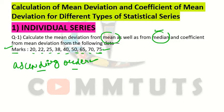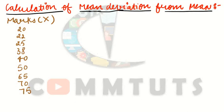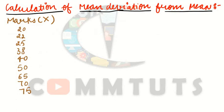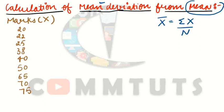Now let's learn to calculate mean deviation from mean. How do we calculate the mean? You have to note down the data from the question. The first step is to calculate the mean. The formula is: mean equals summation x divided by n, where x represents the observations.